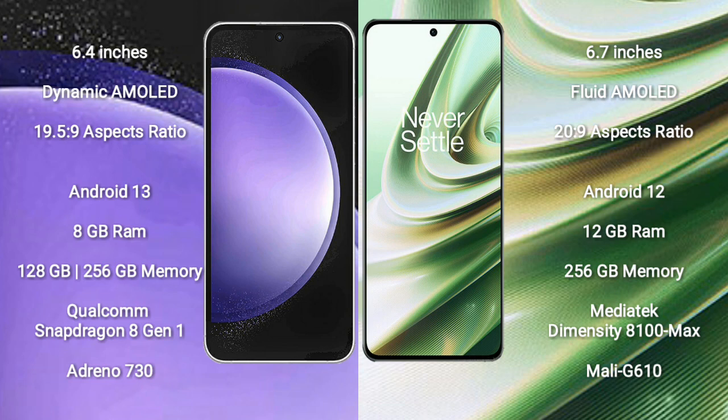Samsung Galaxy S23 FE features a Qualcomm Snapdragon 801 processor and GPU Adreno 730. OnePlus 10R comes with 12GB RAM and 256GB internal storage, MediaTek Dimensity 8100 Max processor, and GPU Mali-G610.